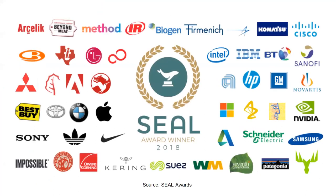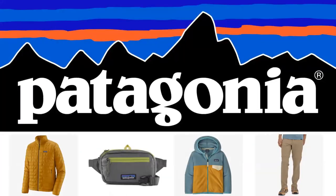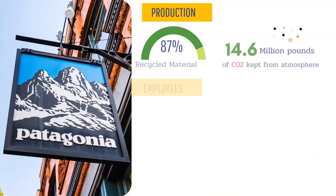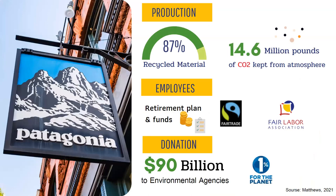Today there are many sustainable companies, and this picture shows the top 50. I will focus on one company: Patagonia. The company produces outdoor apparel and gear. They produce high-quality products while reducing environmental impacts. In terms of production, the company has used 87% recycled material and has kept around 14.6 million pounds of CO2. For employees, gender equality has been promoted for a long time, and employees have been supported through retirement plans and funds. Furthermore, the company has donated around 90 million US dollars to sustainable organizations and created a campaign named '1% for the Planet,' donating 1% of its global sales to preserve and save the natural environment.